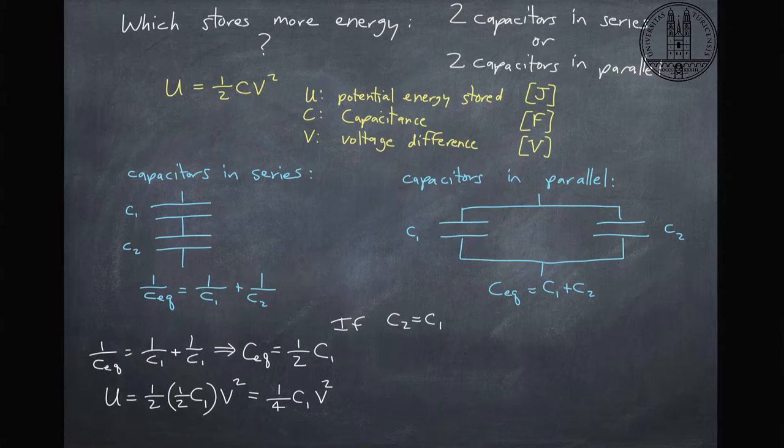So if we take a specific example where we have two capacitors that have the same value, we can solve for the equivalent capacitance and we find that when the capacitors are in series we get half of one of the original capacitors. So the capacitance decreases.